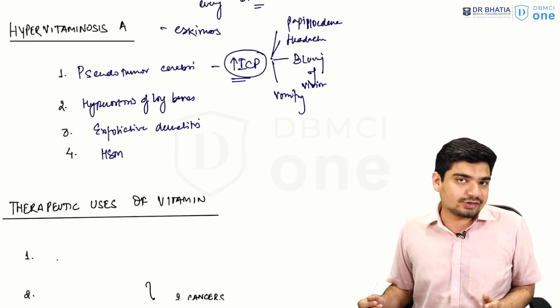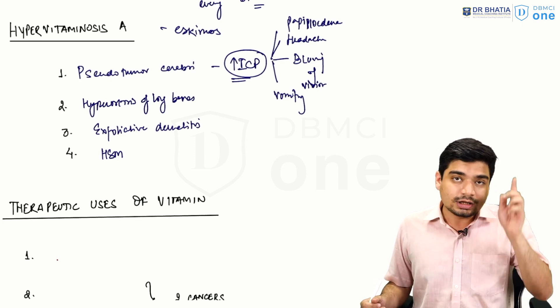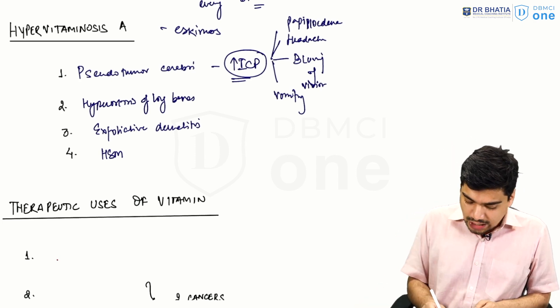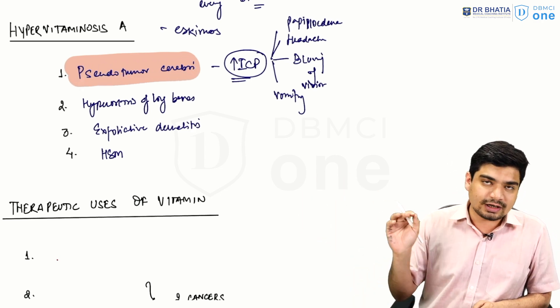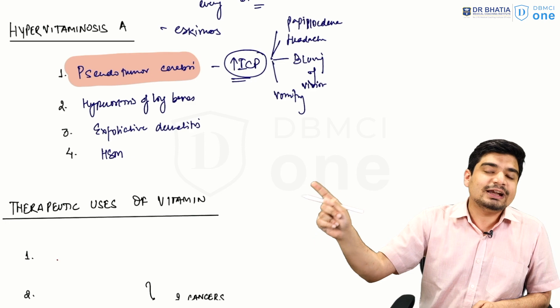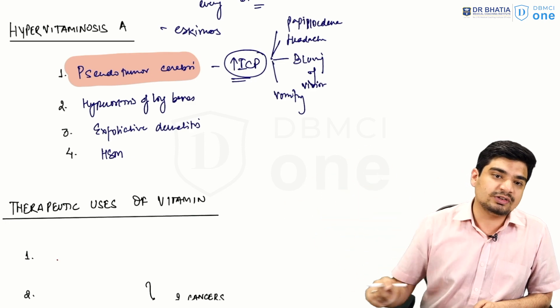These are the signs and symptoms as far as hypervitaminosis A is concerned. The main characteristic one that you definitely have to remember is pseudotumor cerebrii. Even if you don't remember the other ones, definitely remember high vitamin A causes increased intracranial pressure, referred to as pseudotumor cerebrii.